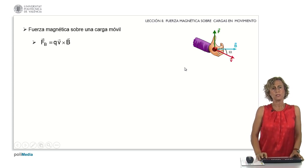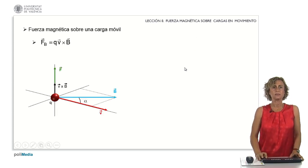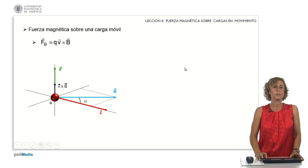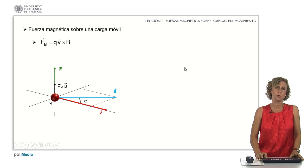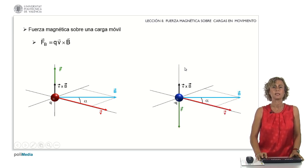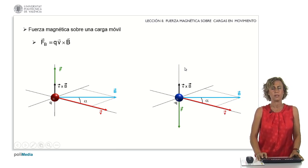What direction and sense will this force have? If the particle has a positive charge, v cross B will have the same direction and sense as F. In any case, it will always have a direction perpendicular to the plane determined by v and B, with sense equal to v cross B if the charge is positive. If the charge is negative, it will also have a direction perpendicular to that plane, but in the opposite sense to the product of v and B.